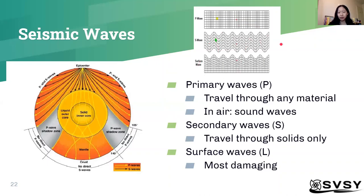The last type of wave is the surface wave, also called L-waves, and they travel at the surface. That means they are the most damaging because all buildings and people are on the surface of the Earth.